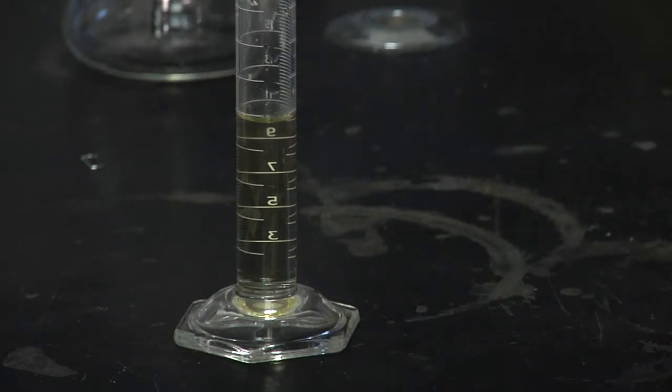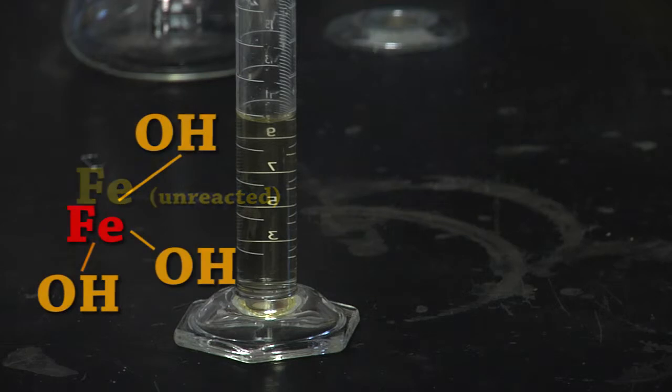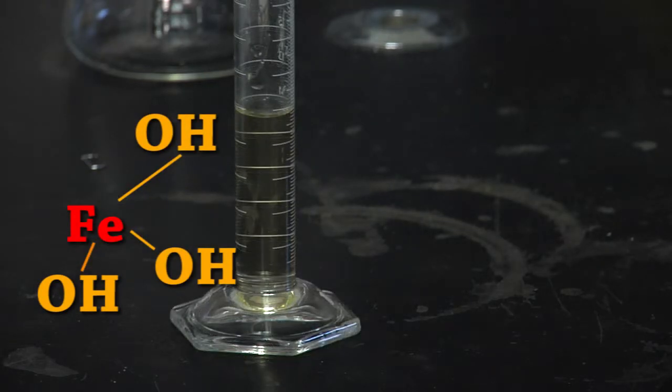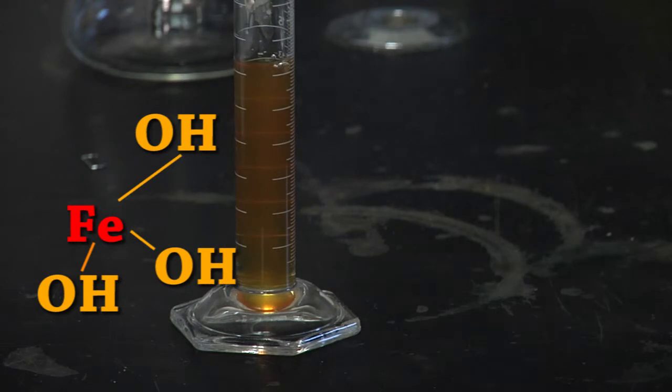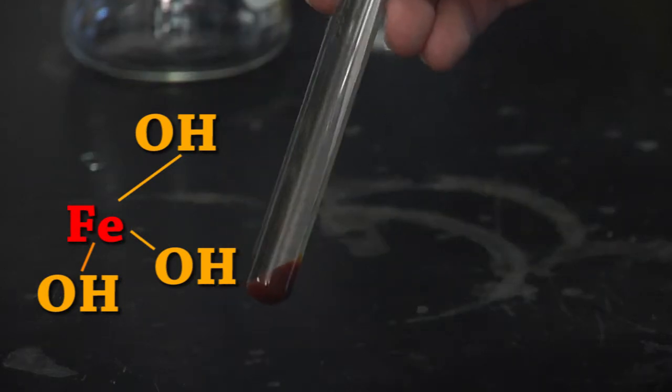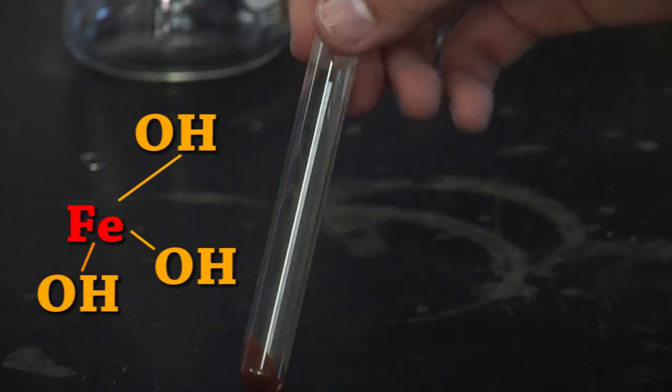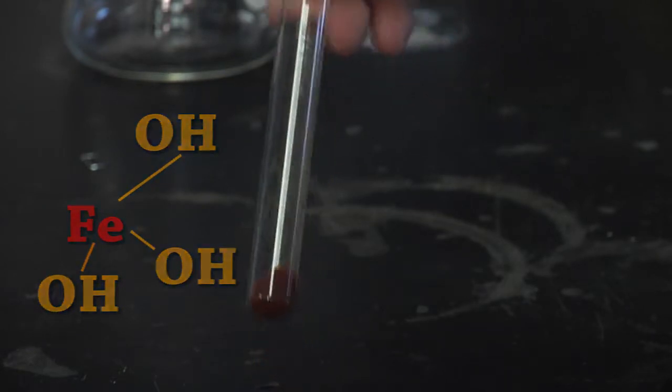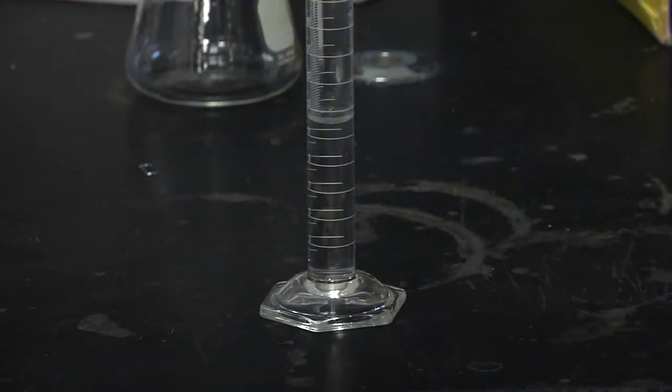Okay, so now that we have excess iron in solution, we need to remove that with the hydroxide. We are going to go ahead and add the sodium hydroxide, and you will immediately see a reaction. After centrifugation, you should have something that looks kind of like this.